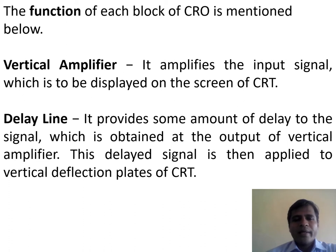The delay line provides some amount of delay to the signal obtained at the output of the vertical amplifier. This delayed signal is then applied to the vertical deflection plates of the cathode ray tube.